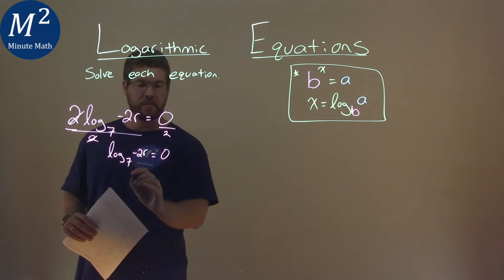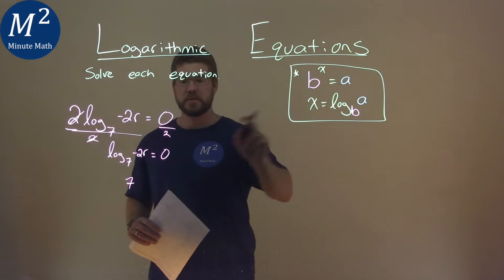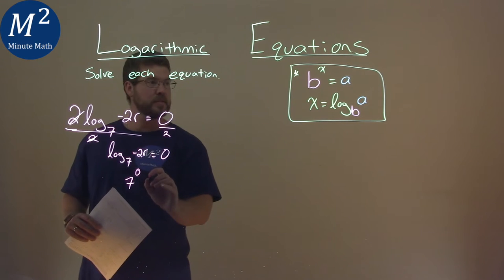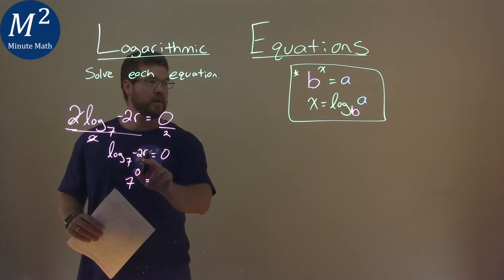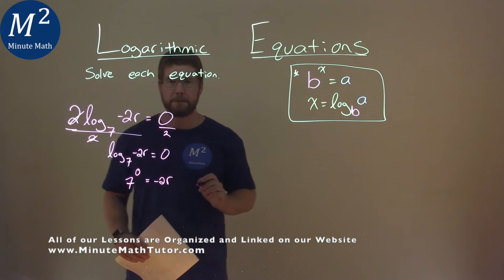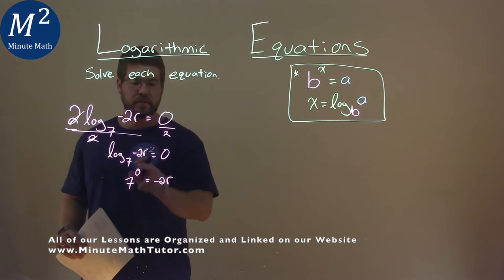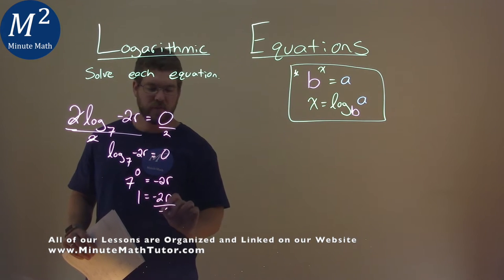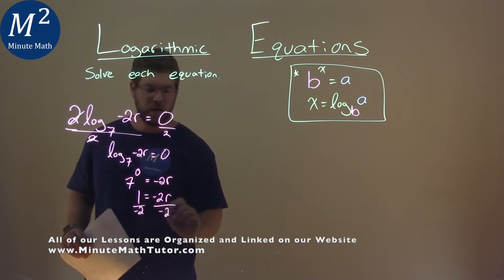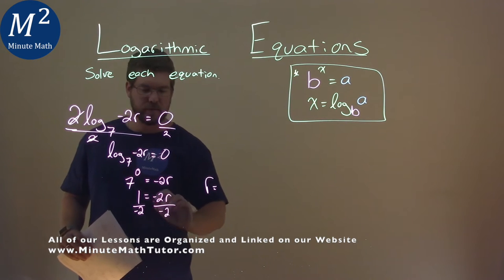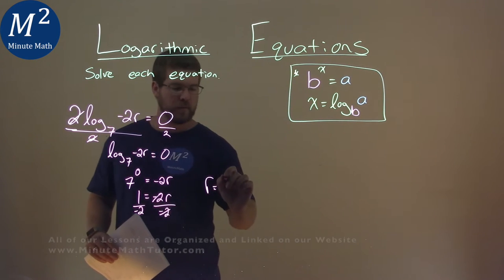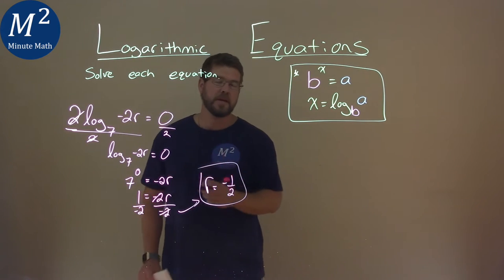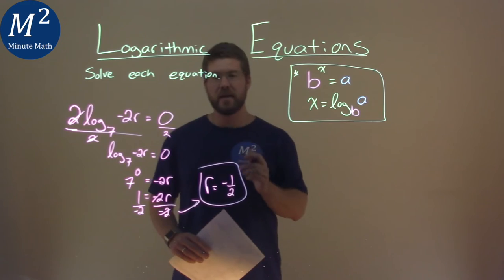So our base is 7, raised to the x value — which is 0 — equals the inside part, negative 2r. 7 to the 0 power is just 1, so 1 equals negative 2r. Divide both sides by negative 2, and r equals negative 1 half. Our final answer is r equals negative 1 half.